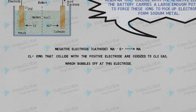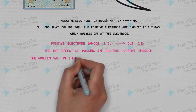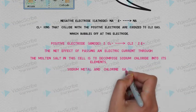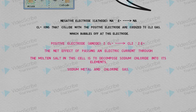But in the other equation, the net effect of passing an electric current through the molten salt in this cell is to decompose sodium chloride into its elements, sodium metal and chlorine gas.